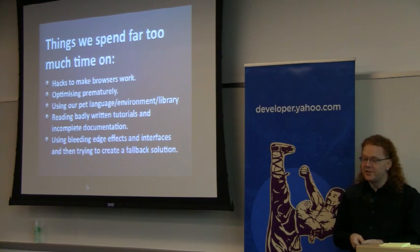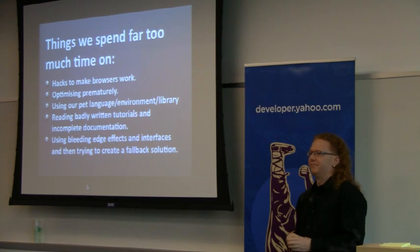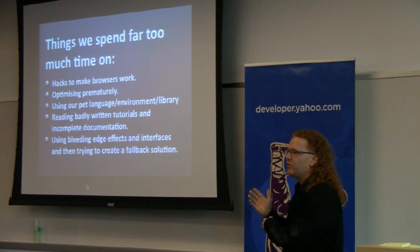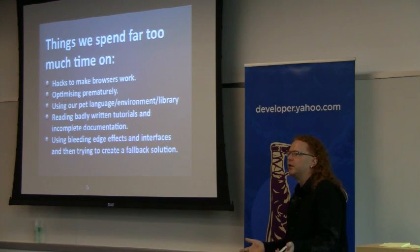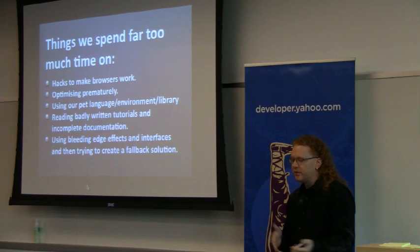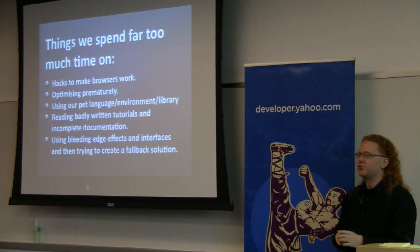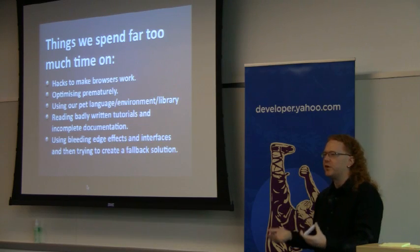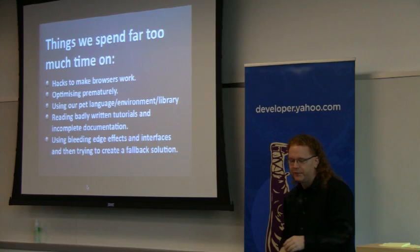Then we use bleeding-edge effects and interfaces and try to create a fallback solution. Start with the thing that works, then make it fancy — that's all it takes. This is the main trick about web development: start with something that works for everybody, then make it fancy. Don't build the drag-and-drop 3D cube with light sourcing and then wonder why somebody without a mouse can't use it.